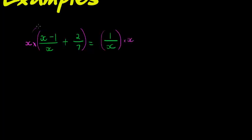Then it distributes. When it distributes for the first term, I see my X's would cancel, so I'm left with X minus 1. For the second term I have plus 2X over 7, and on the other side my X's cancel again leaving me with 1.